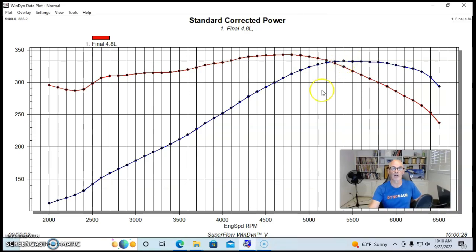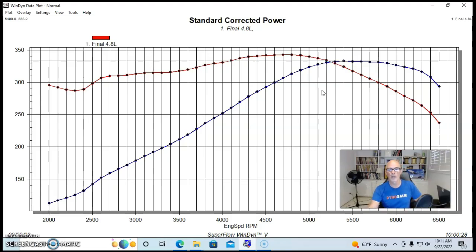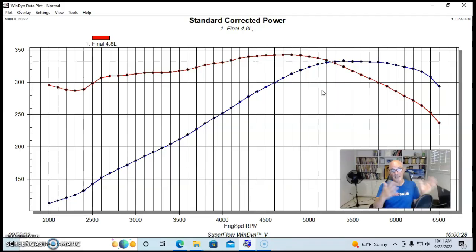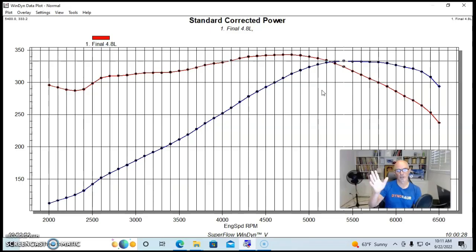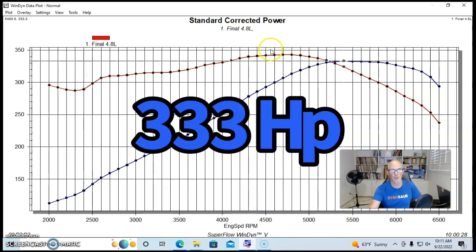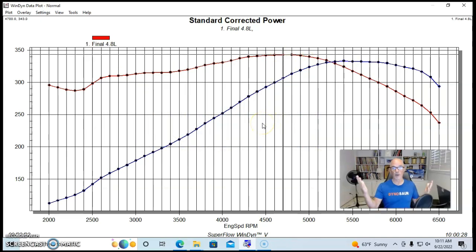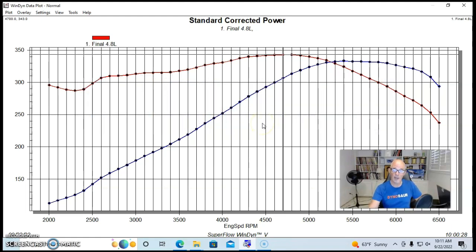We started off with our stock LR4 junkyard motor. Everything stock from the wrecking yard. We ran it with long tube headers, a Holley HP management system. We had bigger injectors in it to feed the intended power output because that would become necessary, but run with the stock truck intake manifold and long tube headers and no accessories. Our factory LR4 4.8 liter produced 333 horsepower and 343 foot pounds of torque. So it made over one horsepower per cubic inch by a pretty good bit in this case, but we were just getting started.